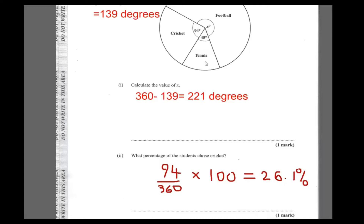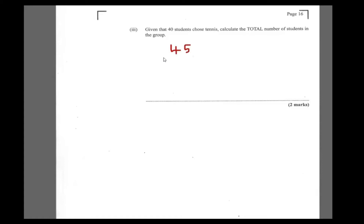Now it says: given that 40 students chose tennis, calculate the number of students in the group. 40 students chose tennis — that's just crazy. What that is telling us is that 45 over 360 times the total amount of students equals 40. Tennis was 45 degrees, so 45 over 360 times t — where t stands for total — equals 40.